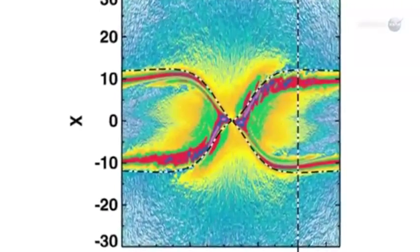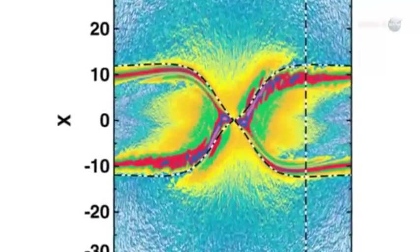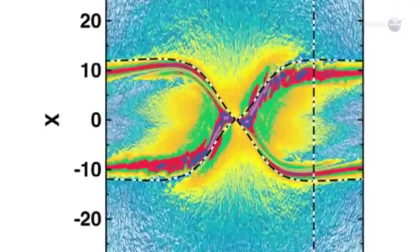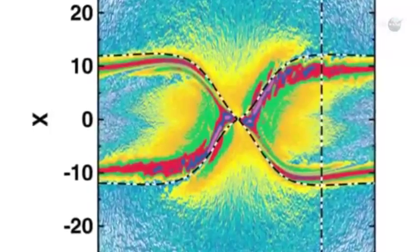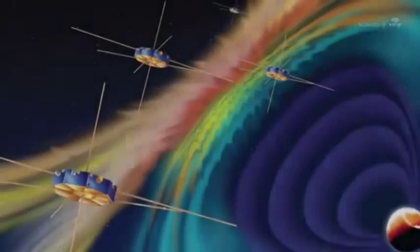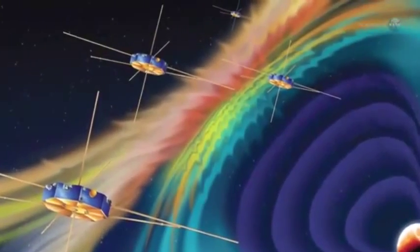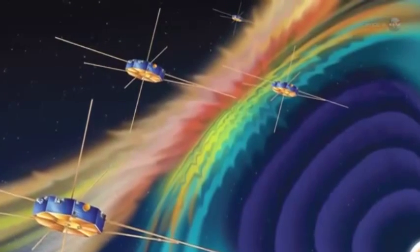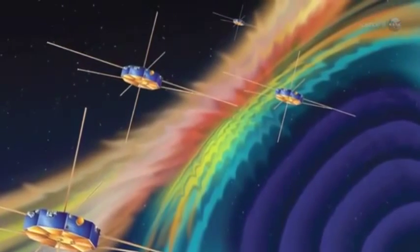A single spacecraft, properly instrumented, can make these measurements. This means that a single member of the MMS constellation using the diagnostics can find a portal and alert other members of the constellation.